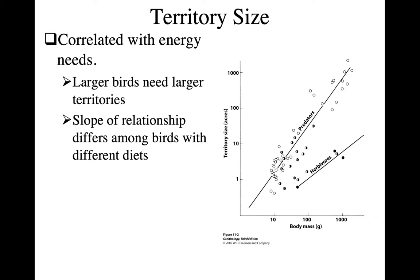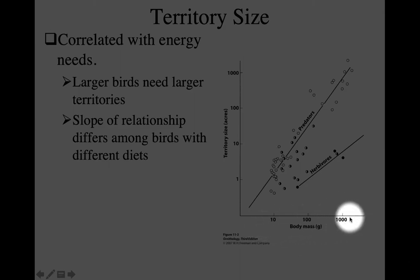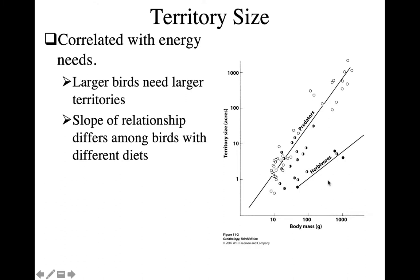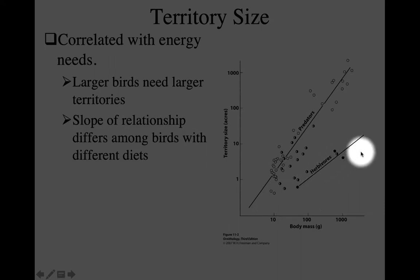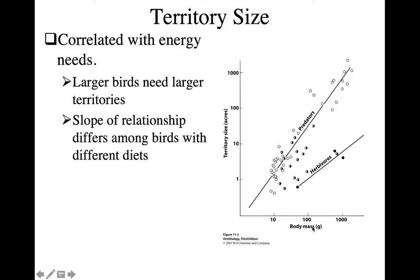When you do defend a territory, there is a correlation with energy needs and territory size. In general, larger birds need larger territories, and as mass increases, territory size increases. But how fast that increase goes with increased mass depends on the foraging resource. Herbivores generally don't increase as fast — as they get larger, they don't need as big a territory as a predator does. That makes sense: if you're an herbivore, you're at a lower part of the food web, and there's more general energy available in a smaller area than for predators at a higher trophic level.